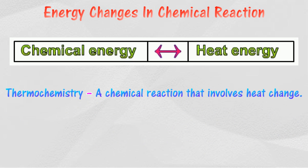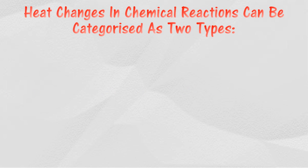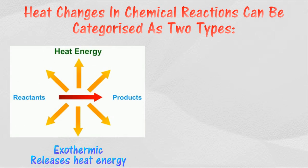There are two kinds of chemical reactions that undergo changes in heat. They are exothermic reactions and endothermic reactions. Exothermic reaction is a reaction which gives out heat energy to the surroundings.